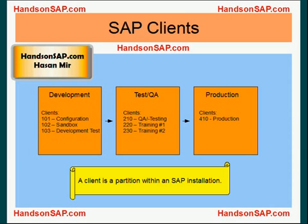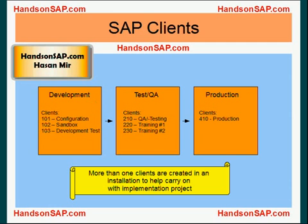Typically, you would create three clients in a development environment: configuration, sandbox, and development test. And you would have three clients in a test or QA box, namely QA testing, training 1 and training 2 — and if more training clients are required, those could be created here as well. Production typically contains one real client representing the actual company, called production. More than one client are created in an installation to help carry on with the implementation project.